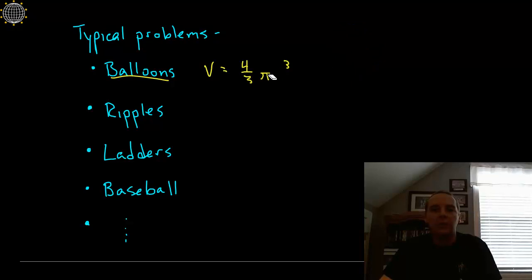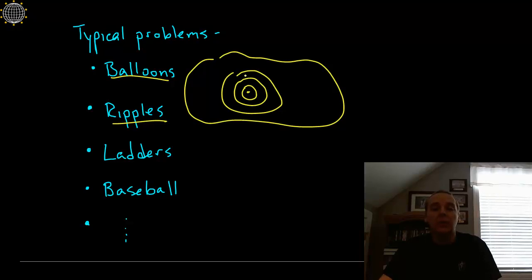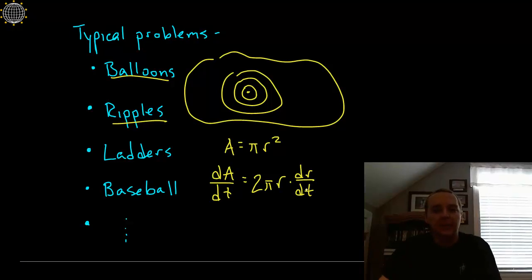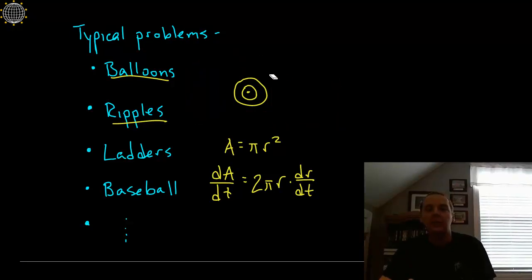I'm going to go through a little quicker through the last ones. Ripples in a pond - this is a very popular one. You have a big pond, somebody drops a rock in it and it starts to create ripples, but the ripples move outward at a certain rate. So we know for instance the area of a circle is pi r squared, and so you can take the derivative with respect to time, so dA/dt, the change in area over time, would be two pi r - the two comes down - times dr/dt. Implicit differentiation again: the derivative of one variable with respect to a different variable.